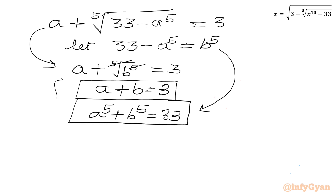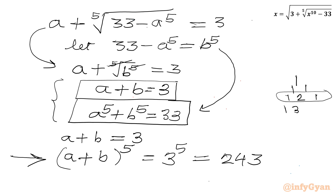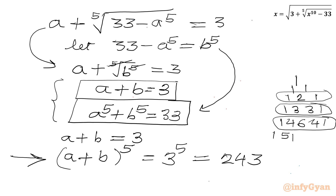Let us solve this new system of equations using Pascal's triangle and binomial expansion. We have a plus b equals 3, and raising both sides to the power 5 gives (a plus b) to the power 5 equals 3 to the power 5, which is 243. For the coefficients using Pascal's triangle: power 2 gives 1 2 1, power 3 gives 1 3 3 1, power 4 gives 1 4 6 4 1, and for the required power 5 the coefficients are 1 5 10 10 5 1.